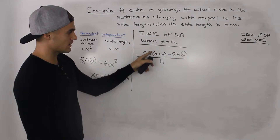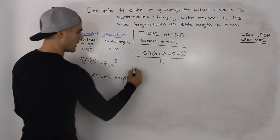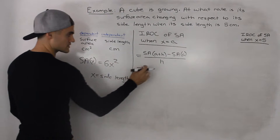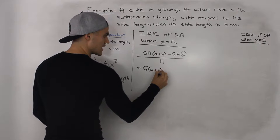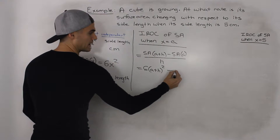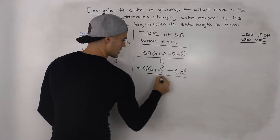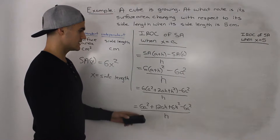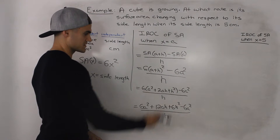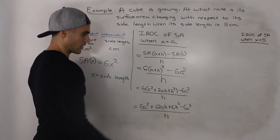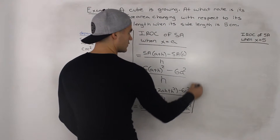Finding the instantaneous rate of change when x equals some general value a, we set up the difference quotient: the surface area as a function of a plus h, minus the surface area as a function of a, all over h. Plugging in, the surface area at a plus h is 6 times (a plus h) squared, minus 6a squared, all over h. We expand (a plus h) squared by FOILing to get a squared plus 2ah plus h squared, then distribute the 6. The 6a squared terms cancel in the numerator.